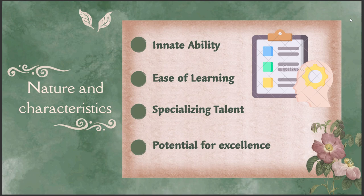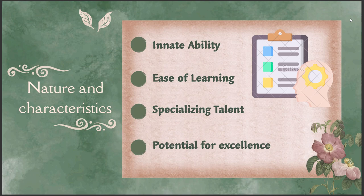Now, the nature and characteristics of aptitude. First, innate ability — it is an inherent quality where a person is born with natural talent for doing something, like Virat Kohli. Second, ease of learning — people with specific aptitude can learn and master skills in their area of talent more quickly compared to others. A great example is the mathematician Srinivas Ramanujan, who even without formal training in mathematics made enormous contributions to mathematical analysis, number theory, and infinite series.